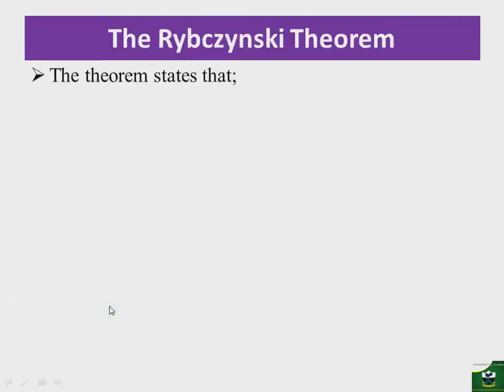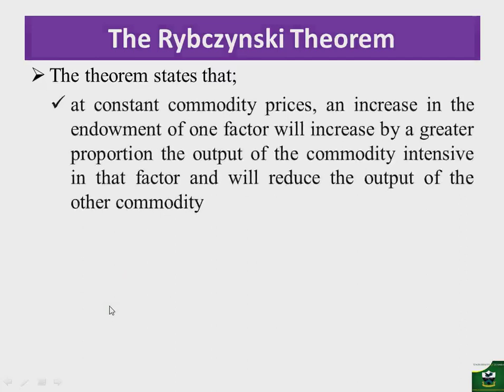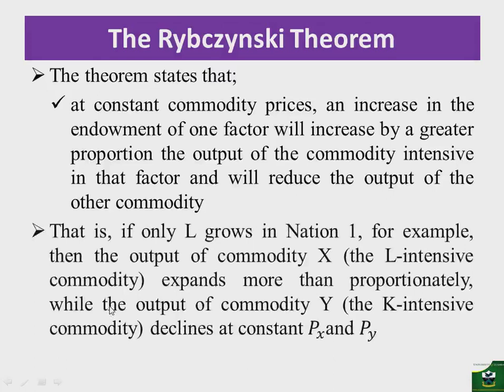Let's now state the Rybczynski theorem, which looks at the growth in factors and its effect on output. The theory states that at constant commodity prices — the price ratio Px/Py — an increase in the endowment of one factor will increase by a greater proportion the output of the commodity intensive in that factor, and will reduce the output of the other commodity. So if only L grows in nation 1, the output of labor-intensive commodity X expands more than proportionately, while the output of capital-intensive commodity Y declines, at the given commodity prices.